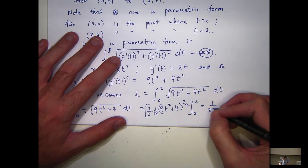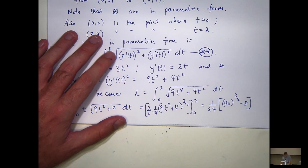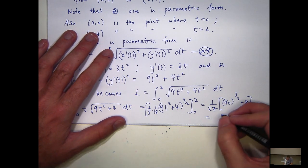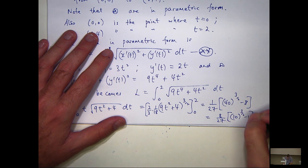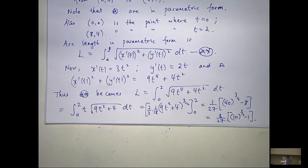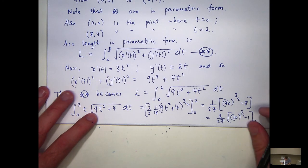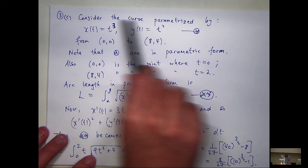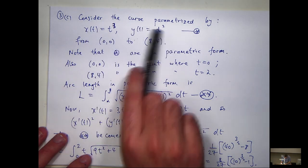Subbing in t=2 and t=0, you get the result. After cleaning it up you get the final answer. That's a little bit different from the previous one.